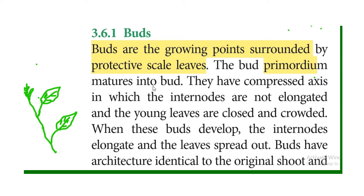Bud primordium matures into bud. Primordium is an organ or tissue in the early stage of development. Bud primordium is a developed stage. Cells are developed and bud primordium is mature.